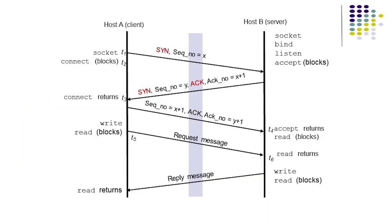Let's first revisit the connection establishment in the context of a client-server application that uses TCP service. Let the client reside in host A and the server in host B. This figure shows that the server must first carry out a passive open to indicate to TCP that it is willing to accept connections. When using BSD sockets, a passive open is performed by the calls: socket, bind, listen, and accept.